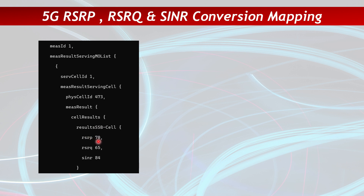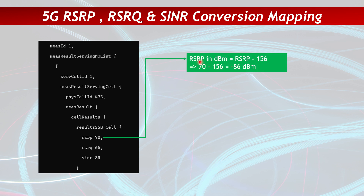The RSRP value of 70 is not exactly 70 dBm — it needs to be converted to a real value. We take this value and subtract 156, so 70 minus 156 equals minus 86 dBm RSRP. When the reported RSRP value is 70, the actual signal level at the UE at that time is minus 86 dBm.